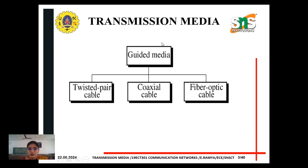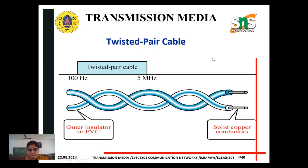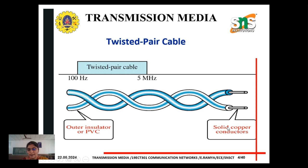What are the types of guided medium? It has a twisted pair cable, coaxial cable, and fiber optical cable. Let's discuss what is meant by twisted pair cable. A real-time example is the TV cable, which is called twisted pair cable. It has two frequencies: 100 megahertz and 5 megahertz. It has an outer insulator or PVC solid copper conductor.